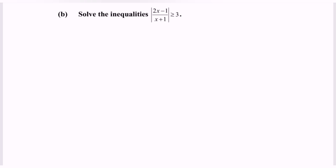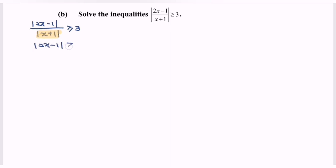So number one, I'm going to split the situation, where we have the modulus of (2x minus 1) over the modulus of (x plus 1) greater than or equal to 3. Kindly note the denominator where we have the modulus of x plus 1. In this case, modulus of x plus 1 is always positive, so we can cross-multiply because it is always positive. So: modulus of (2x minus 1) greater than or equal to 3 multiplied by modulus of (x plus 1).